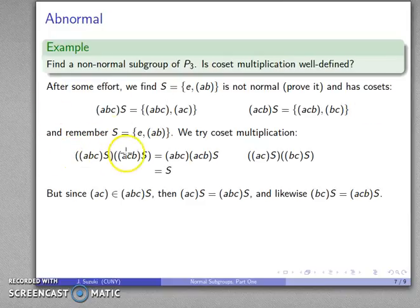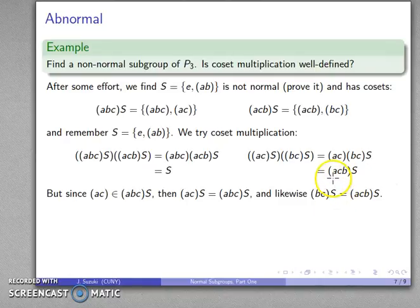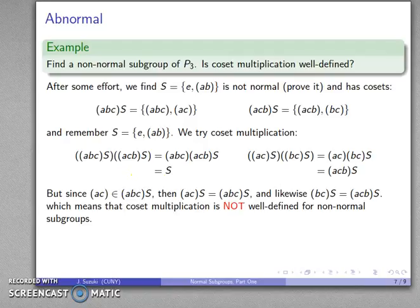And so this product and this product - these are the same cosets - but when I do the product I get (ac) times (bc) and so what that's going to give me is (acb)S, and these are different. And so that says that my coset multiplication is not well-defined if my subgroup is not normal.